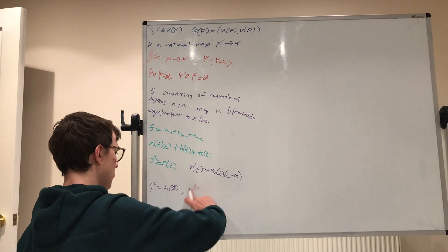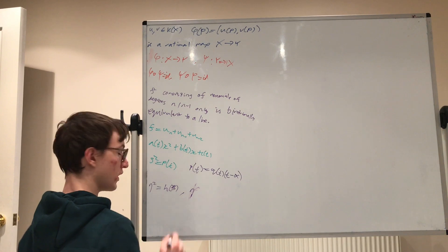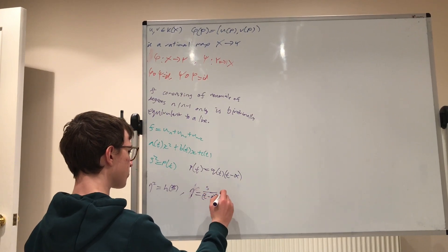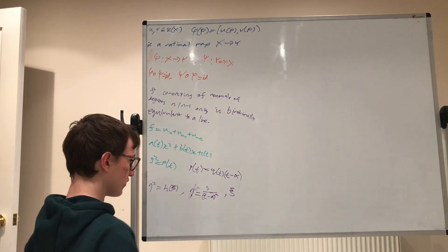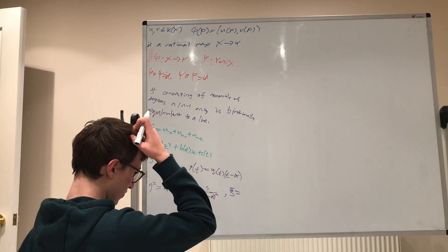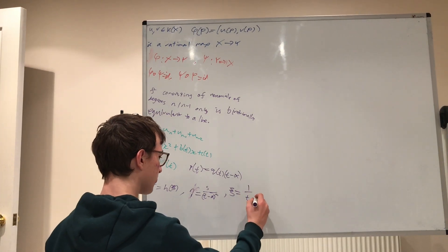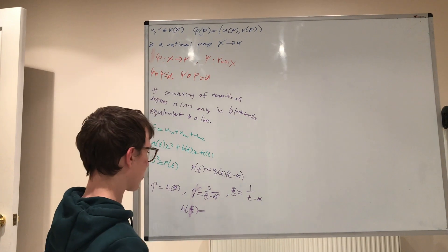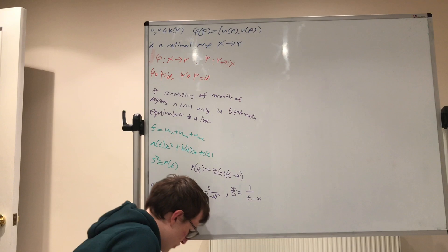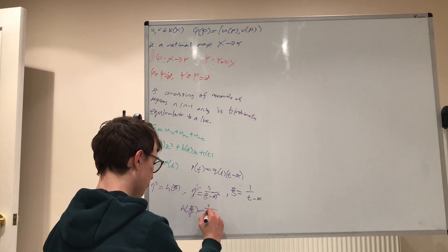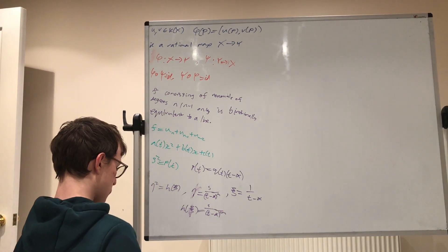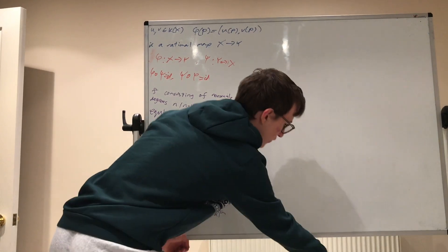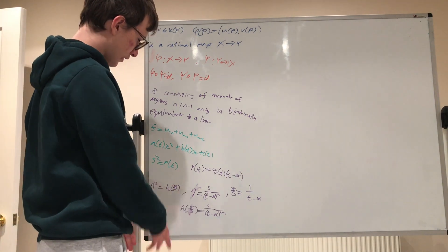Where eta is equal to s over t minus alpha to the m. Xi is equal to 1 over t minus alpha, I believe. And h here is actually meant to be defined as q of t over t minus alpha to the 2m minus 1, which now that I look back on it is pretty obvious, but that should clear that up if in case I confused you.